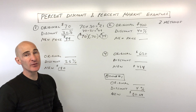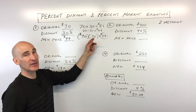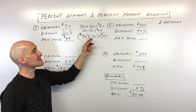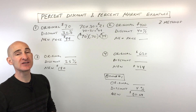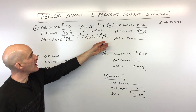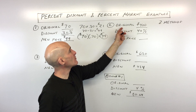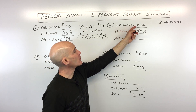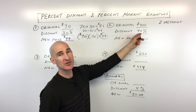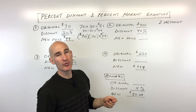The quicker method is a little bit faster — done in one step by focusing on what you're paying, taking 100% minus 30% equals 70%. Let's look at another example. See if you can do this one on your own — you can pause the video. Number two: the original price of an item is $400 and the discount is 40% off.